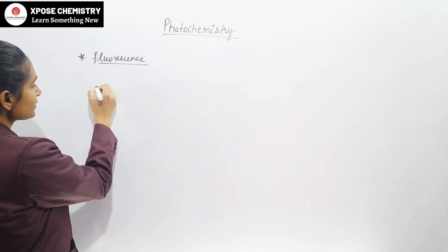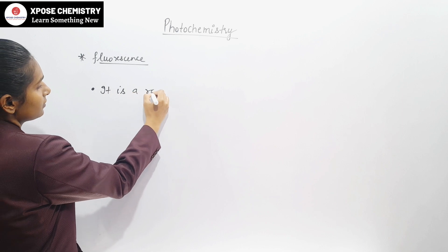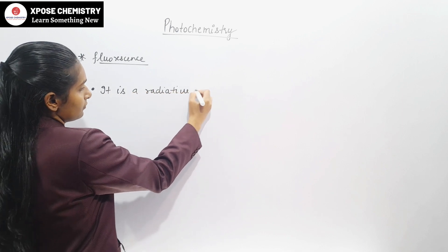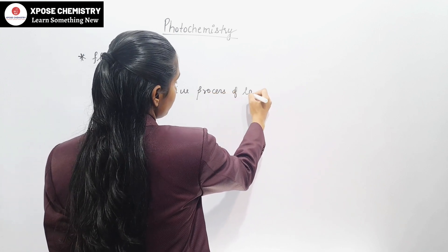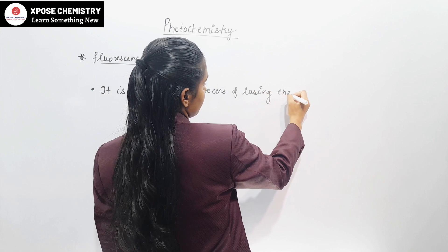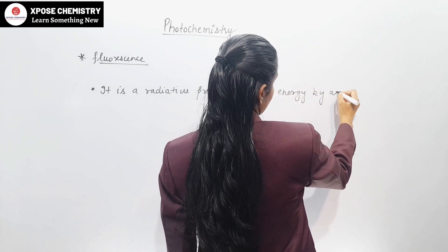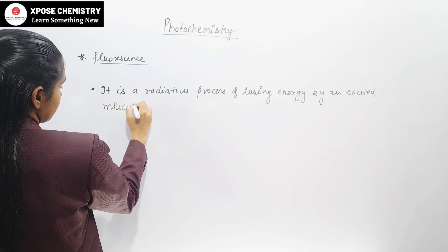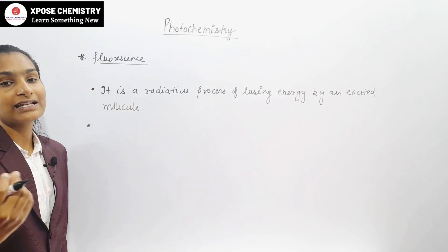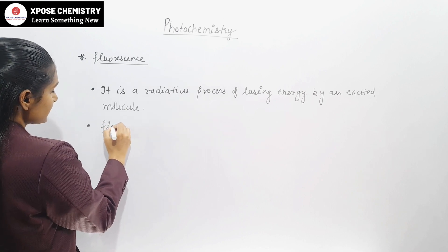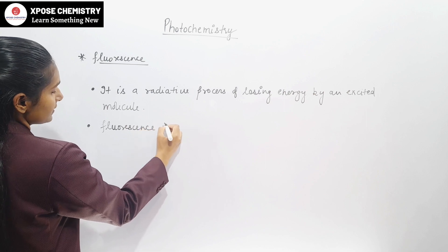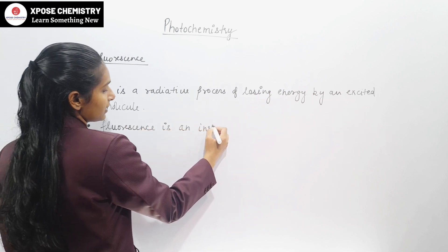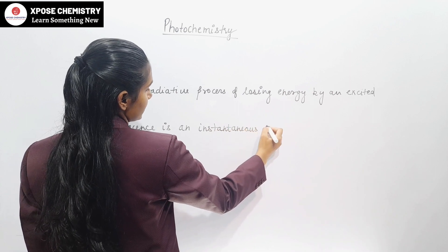So first we will see fluorescence. Fluorescence is a radiative process in which the substance loses energy in the form of radiation by an excited molecule. Fluorescence is an instantaneous process.